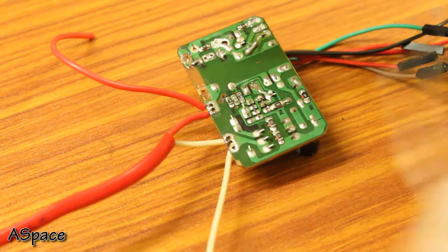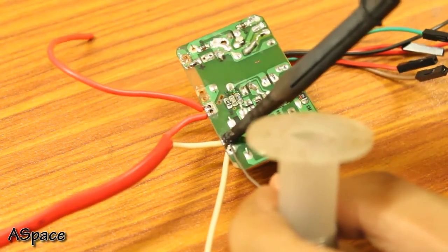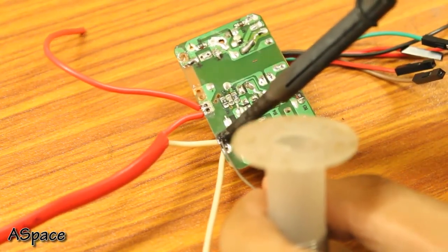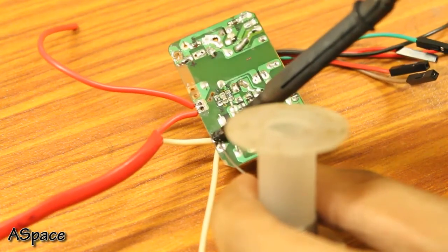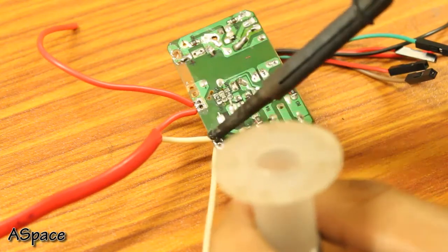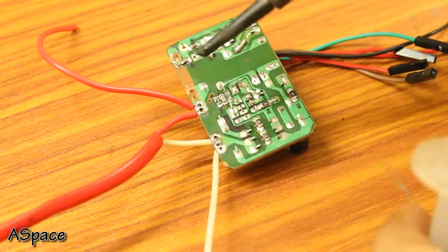Moving on, I soldered the mains wire to the step down module which converts our AC signal to DC signal which will act as a power source for all our modules such as the Arduino, Bluetooth and the relay.